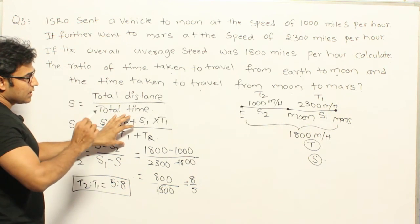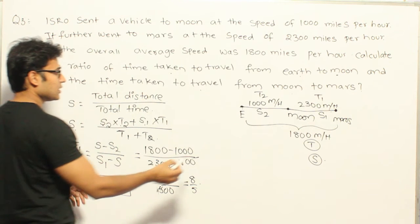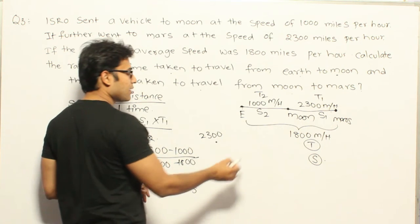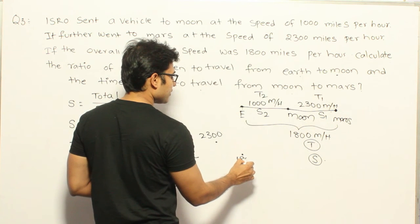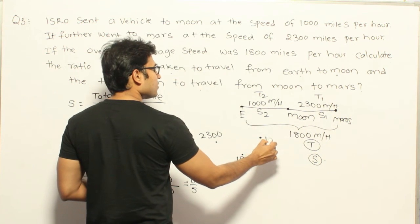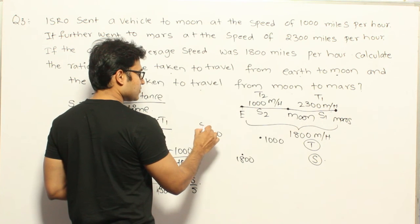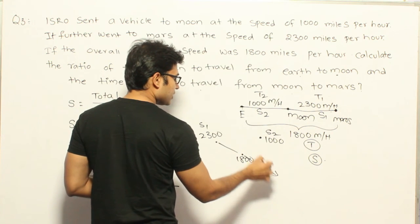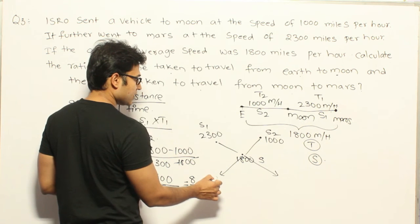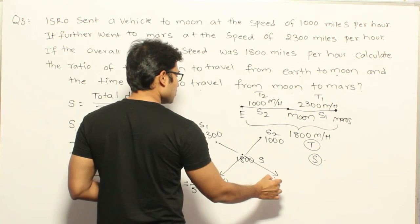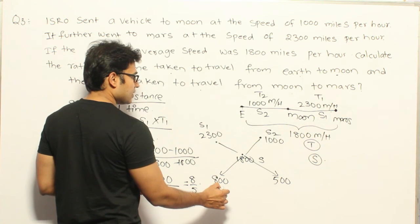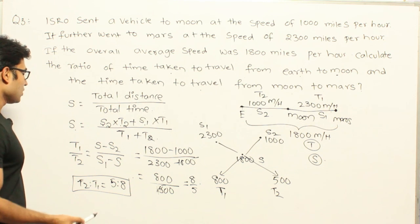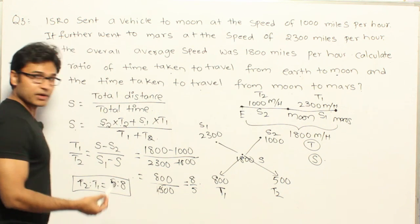If you correlate this with the averages and mixtures alligation method: the highest speed is 2300 (S1), the overall average speed is 1800 (S), and the lower speed is 1000 (S2). Find the difference between S1 and S, which is 800, and the difference between S and S2, which is 500. By the alligation rule, T1 to T2 equals 8 to 5, so T2 to T1 equals 5 to 8.